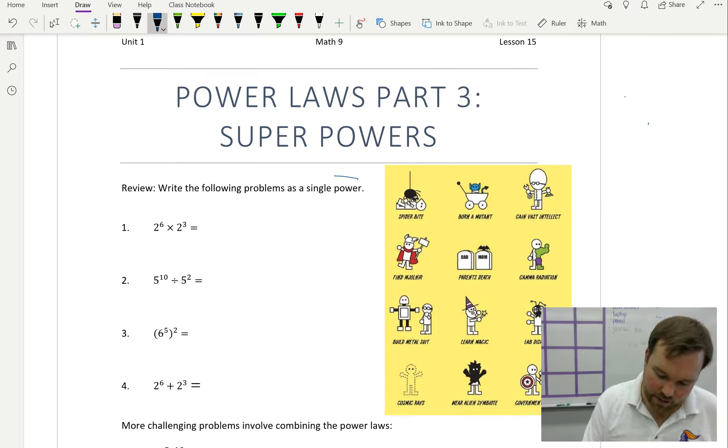So write these as a single power. Often you'll see this written as simplify. Simplify means write the following as a single power. Now, here, same base, we add the powers, so it'll be 2 to the 9. We are not asked to evaluate that, leave it there.